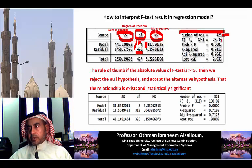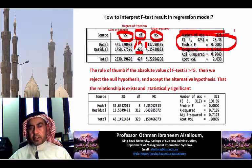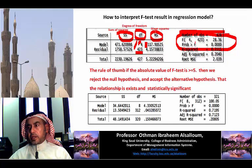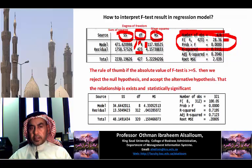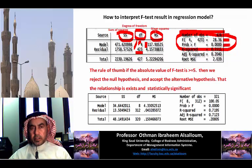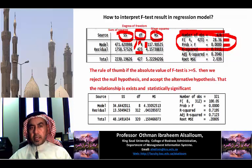More importantly, the F-test result and the probability of accepting the null hypothesis. The probability of F shows that the F-test result is 28, and the probability of accepting the null hypothesis is 0. This means that a relationship exists and it is significant.